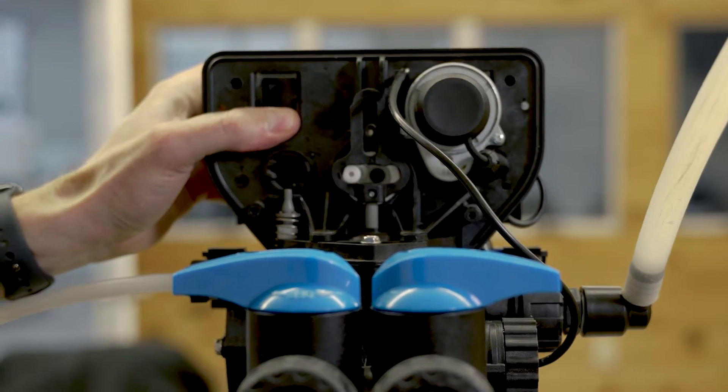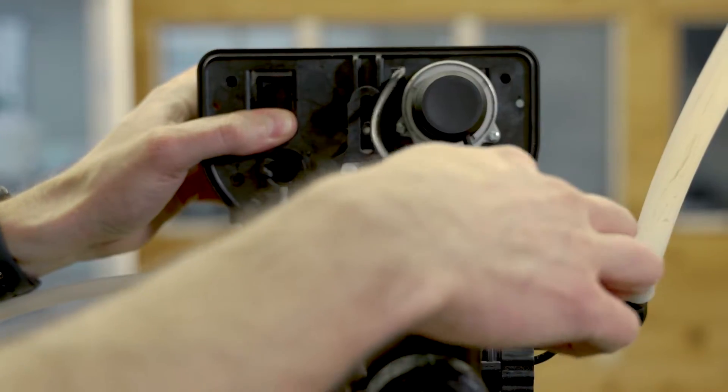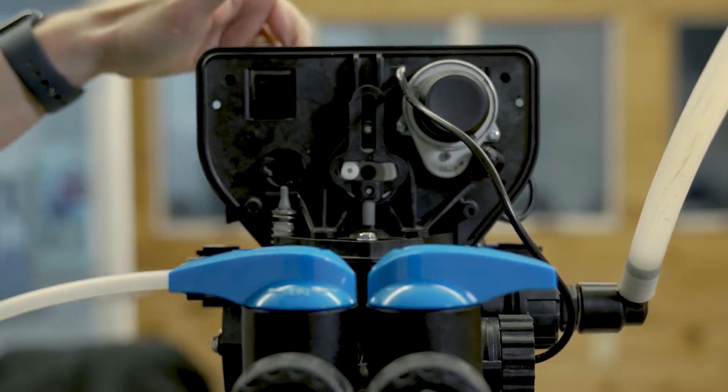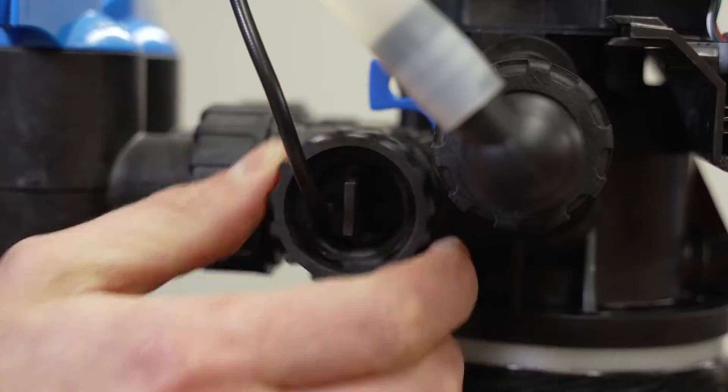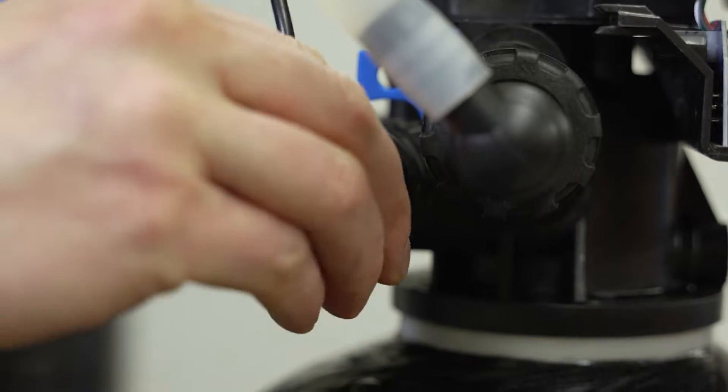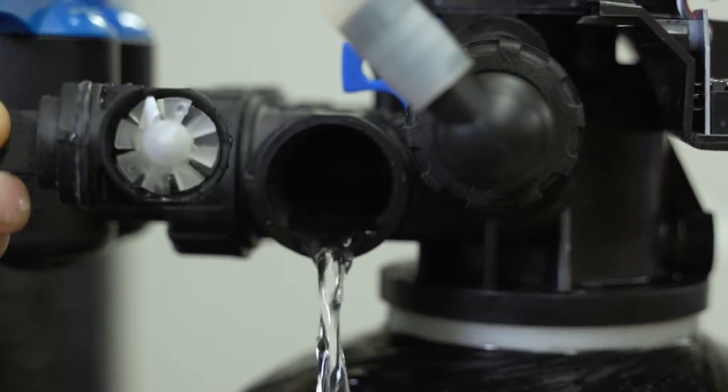Before we remove the power head from the valve body, we'll need to disconnect the meter assembly. You can either do that by unplugging it from the circuit board or unscrewing it from the valve body here and pulling out the meter.